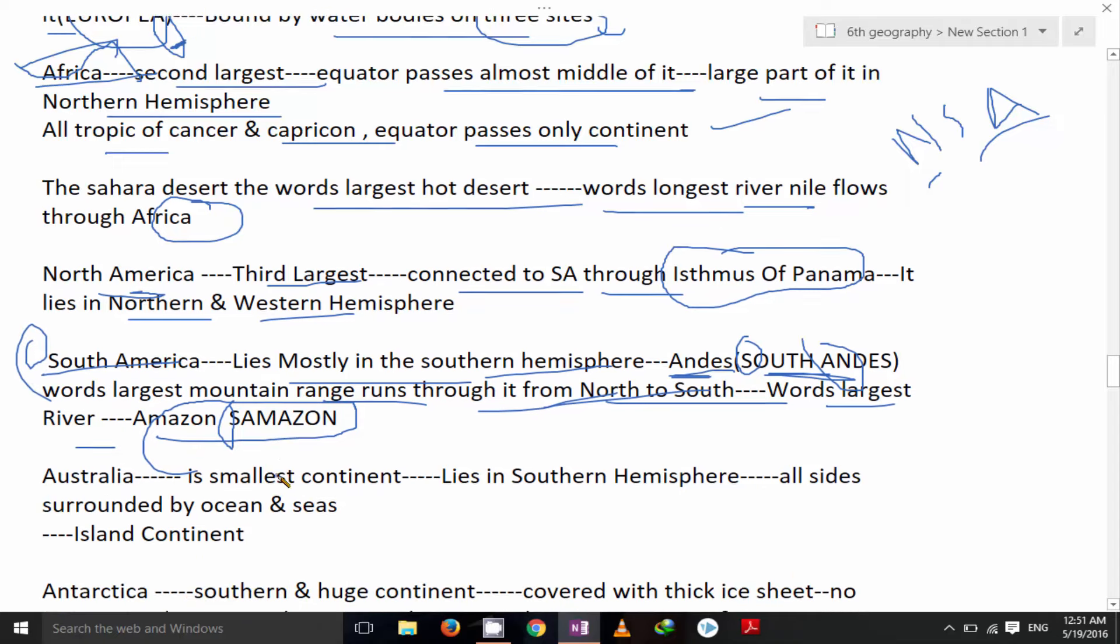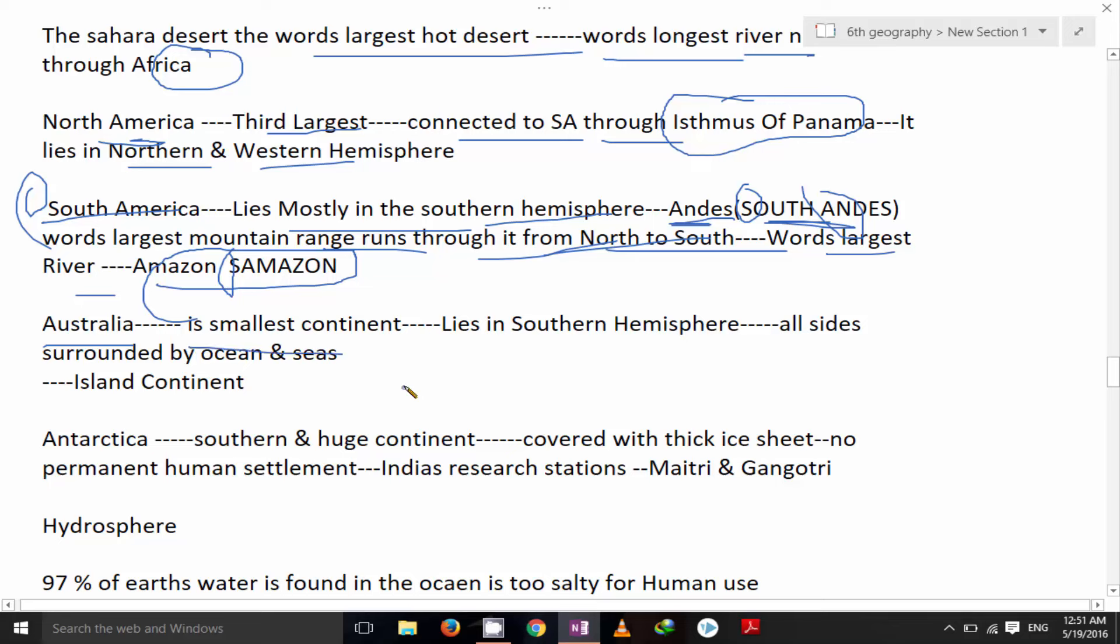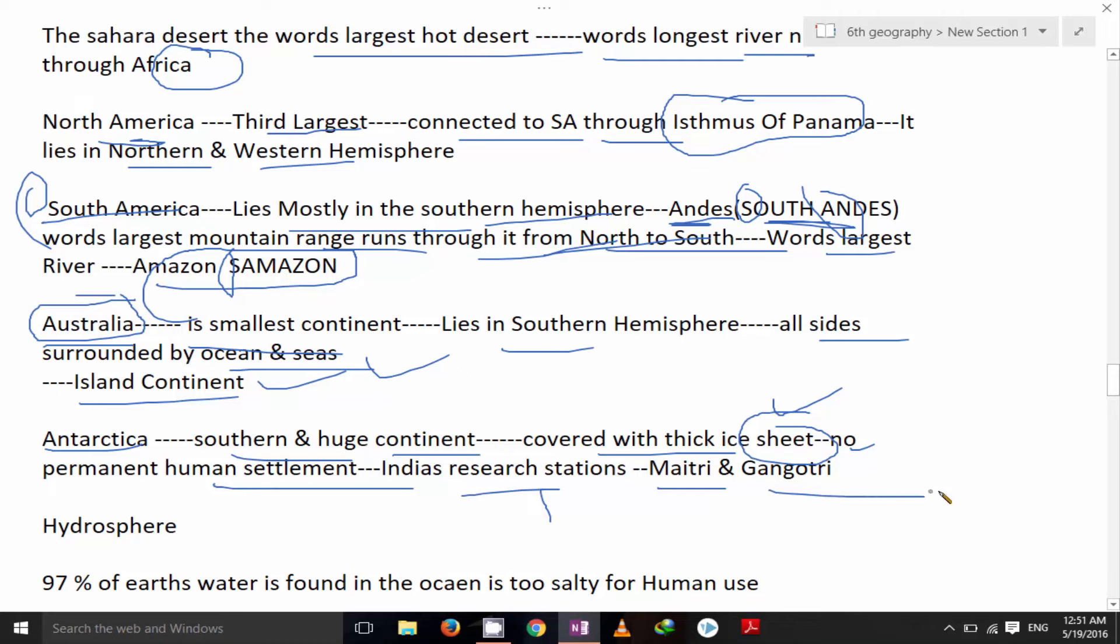Australia. All sides surrounded by the ocean and seas. This is so called island continent. Then Antarctica. Southern huge continent covered by thick ice sheet. There is only ice. No permanent human settlement is there. India's research stations are there called Maitri and Gangotri.